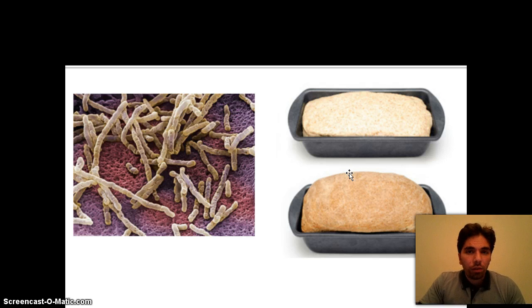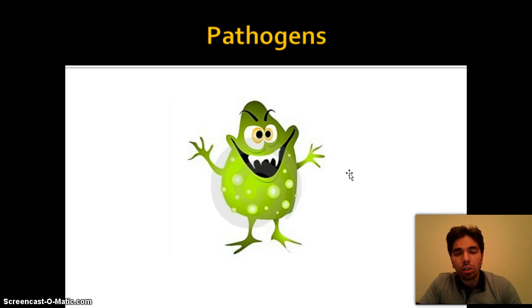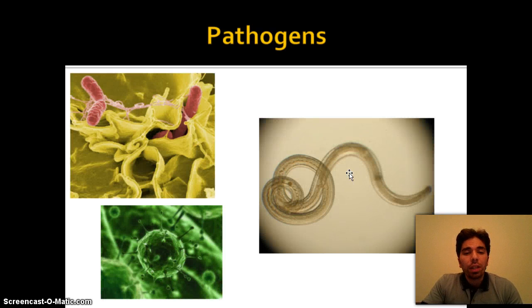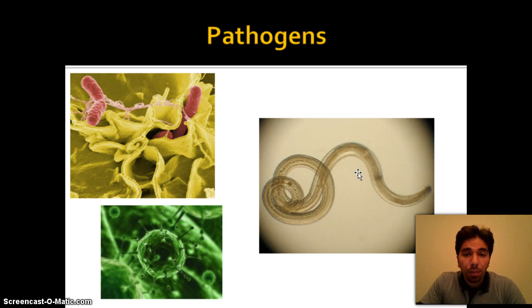Some microbes are bad for us and cause diseases — we call these pathogens. So not all microbes are pathogens. Pathogens may range from types of bacteria, types of viruses, to types of parasites. For example, this worm lives in our stomach and causes diseases, so it is considered a pathogen.